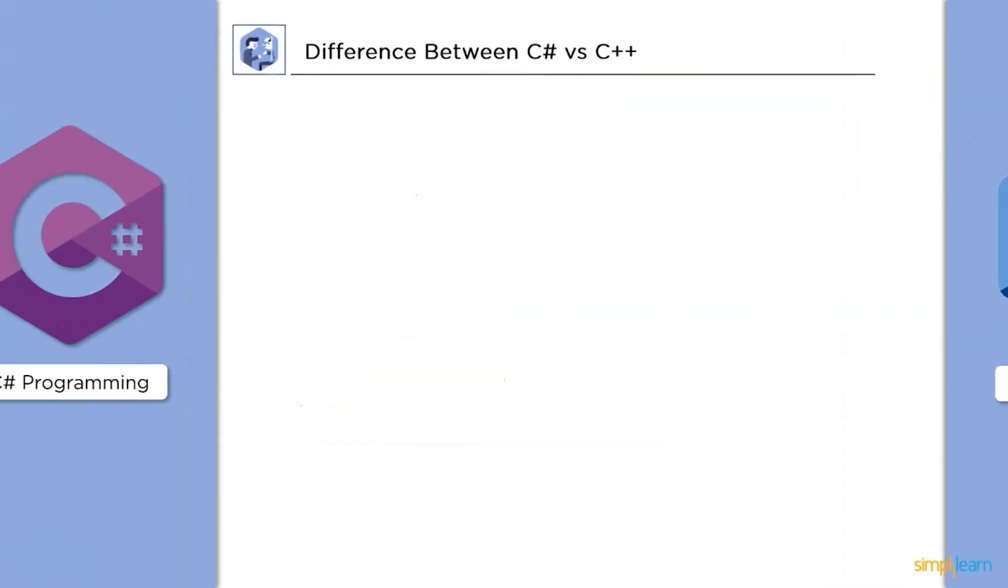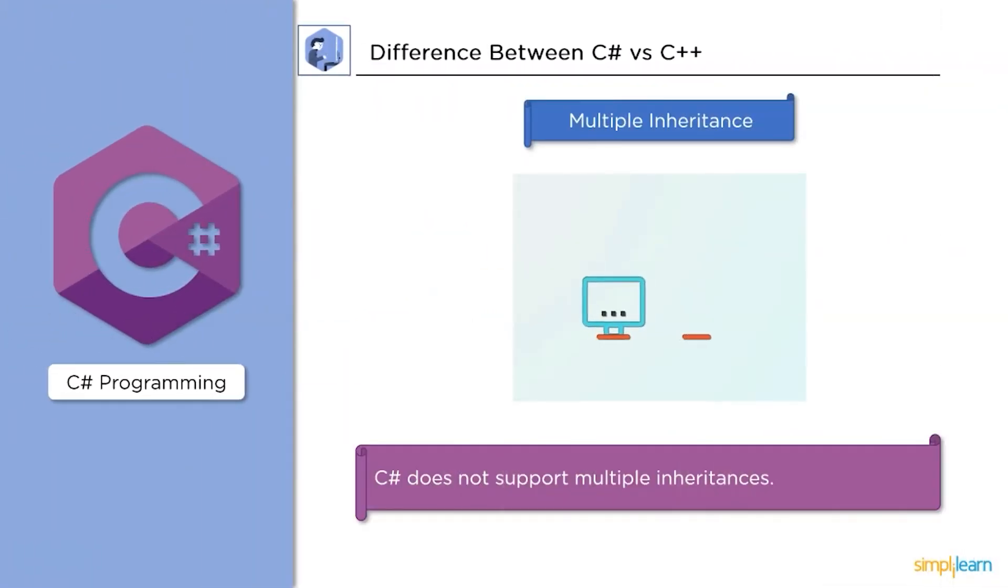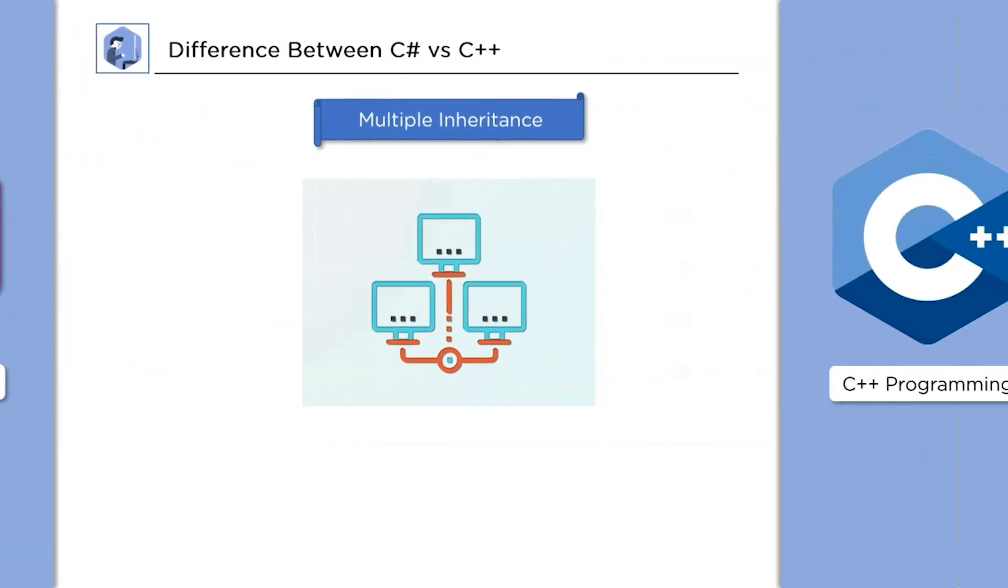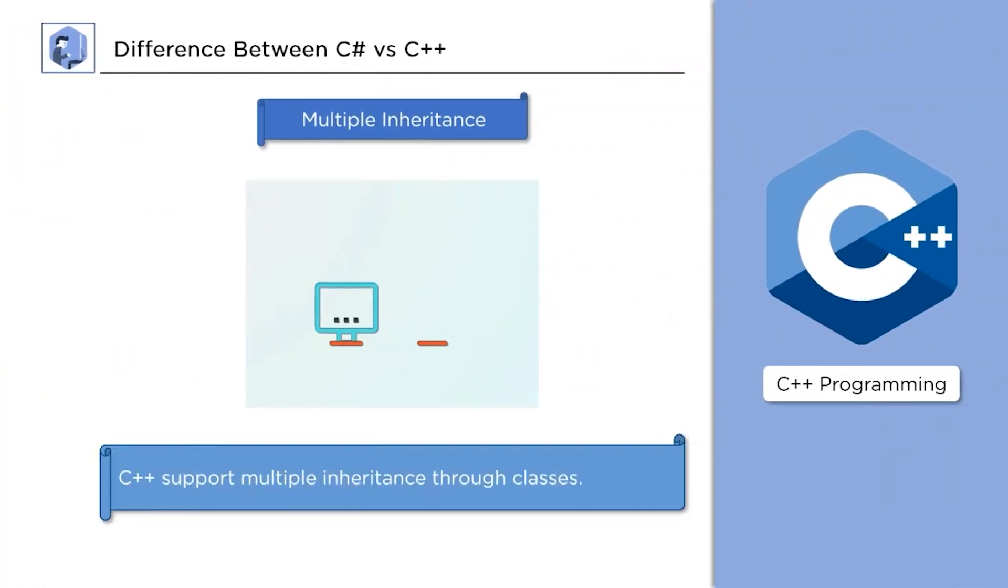Next up, multiple inheritance. C Sharp does not support any multiple inheritance through classes. Multiple inheritance is supported in C++ through classes. This means that a class may extend many classes at the same time.